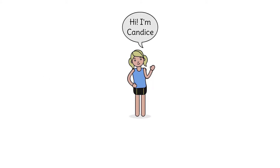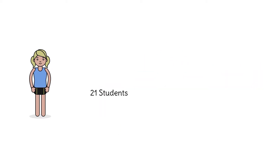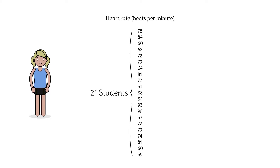Candace coaches a high school volleyball team. Every day, when the girls show up for practice, Candace has them count their pulse for one minute and write their results on the board. There are 21 girls on the team, and they all show up on Monday. Here are their heart rates.